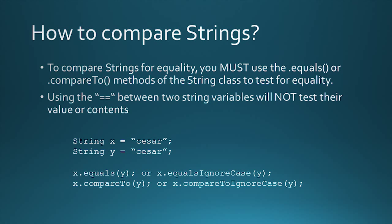How do you compare strings? To compare strings for equality you have to use the dot equals or the dot compareTo methods of the string class. Remember you cannot use the two equal signs to test if two strings are equal — you will only be testing the address location and not the value or the contents of that variable. So if you have two strings x and y with the same value, you must use x.equals(y) or x.compareTo(y) to test for their equality.